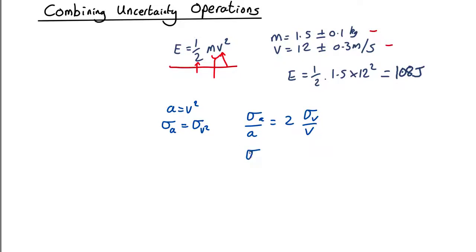So the uncertainty in a, which is the same thing as the uncertainty in v squared, is equal to two a sigma v over v. A is v squared. So that's two v squared sigma v over v equals two v sigma v. OK, so that's got the first step.